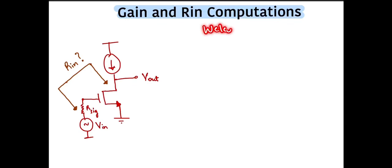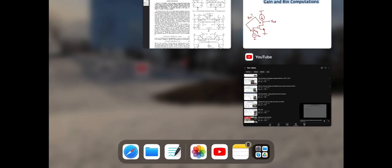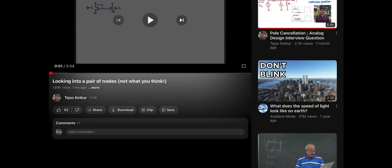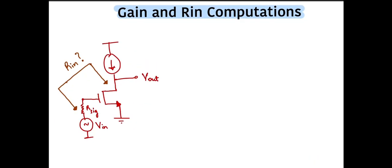Hey, welcome back. In one of my earlier videos titled 'Looking into Two Nodes,' I discussed the procedure of computing the input impedance across a pair of nodes through the example of a simple current mirror. You may check that video out in the description below. In today's video, I want to drive that point home by illustrating the concept through the input impedance computation across the gate and drain of a common source amplifier.